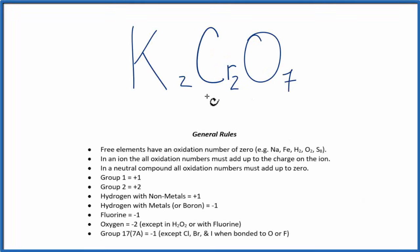In this video, we'll find the oxidation numbers for each element here in K2Cr2O7. That's potassium dichromate. And we use these rules here to help find out the oxidation number.